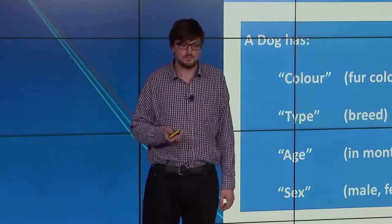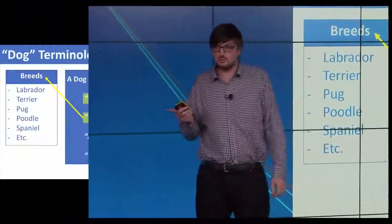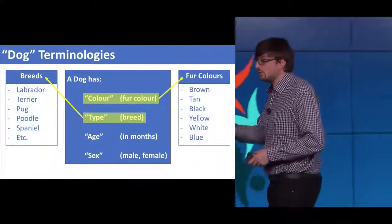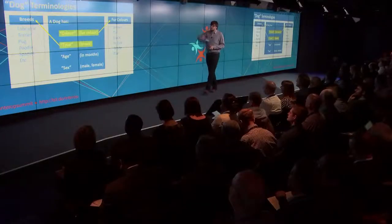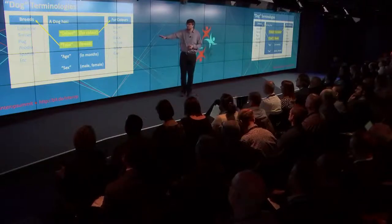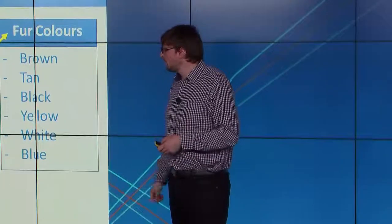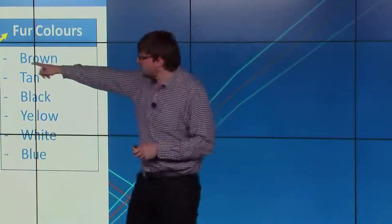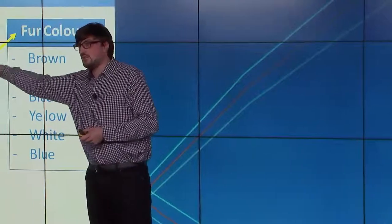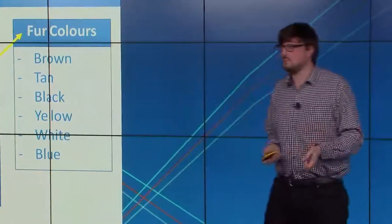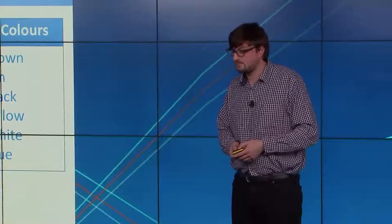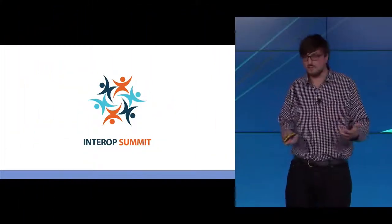We can go one step further and add some terminologies. We can say that when we talk about colour and fur colour, we actually mean a value that comes from a list of fur colours — this is a terminology. When we say breed, we mean a value from a list of breeds. So now we know at both ends what we're expecting to be in those fields. So we have data represented in XML or JSON, we have meaning, but how do we start moving it around? That's where messages come in.